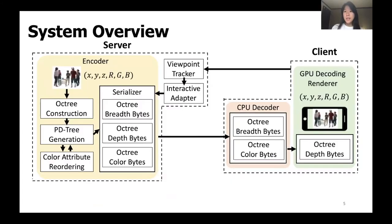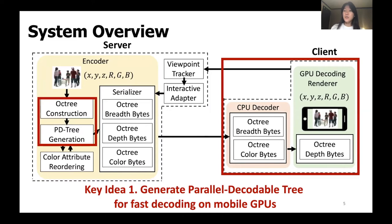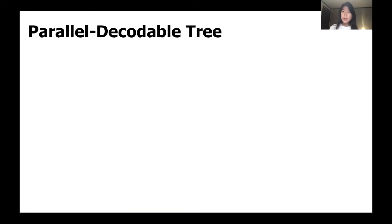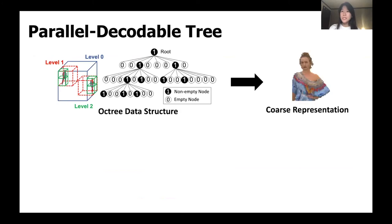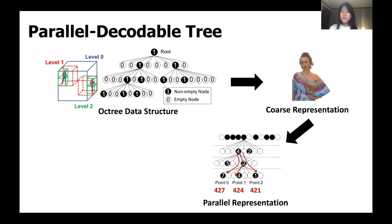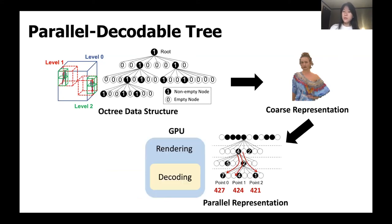So how did GROOT achieve this? The first key idea was to modify the conventional compression scheme and generate a parallel decodable tree to enable fast parallel decoding on mobile GPUs. Specifically, conventional systems use special 3D tree data structures like Octree to compress the geometry information, but this doesn't allow parallel processing, resulting in slow decoding speed. So we used the data structure to only encode the coarse representation, then modified the remaining structure to generate parallel representations, which can be integrated in the GPU rendering pipeline to generate the final high quality representation.